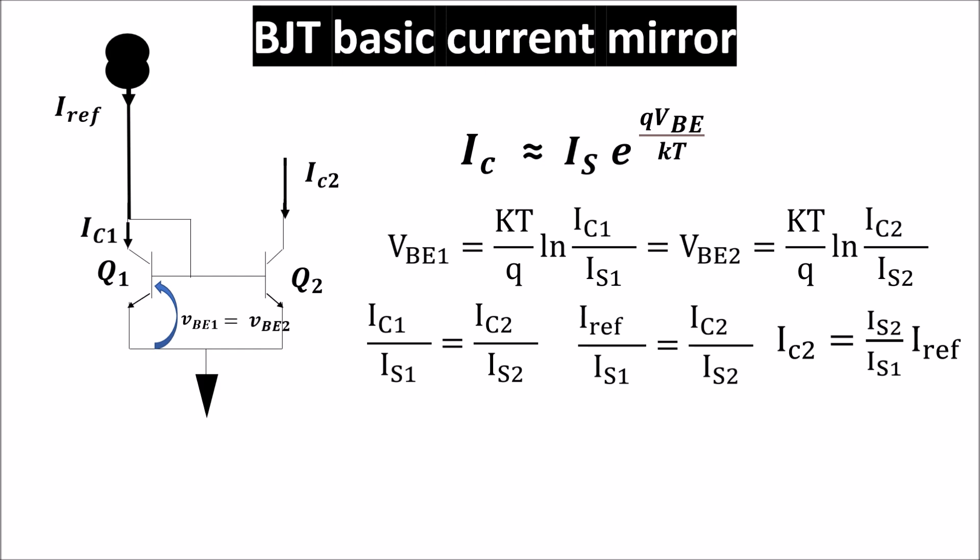Remembering that the saturation current IS is this, we have to build the two BJTs equal in order to have a good copy of the reference current. And we need also to put the two BJTs near one to the other. If we do that we are confident that all the process parameters we see in IS would be equal and the two BJTs would operate at the same temperature. When the transistors are built equal you say that they are matched.